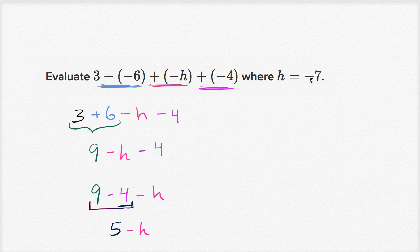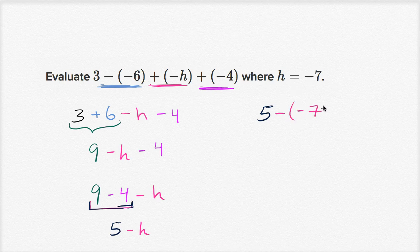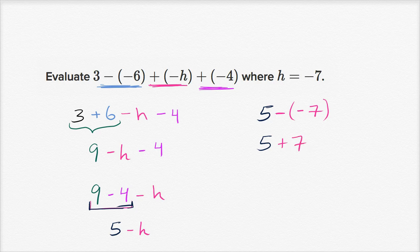Now I can substitute h with negative seven. So this is going to be five minus — and now where I see an h, I replace it with negative seven. Five minus negative seven. Be very careful there — h is negative seven, so you're subtracting negative seven. Five minus negative seven is the same thing as five plus seven, which we all know is equal to 12. And we're done.